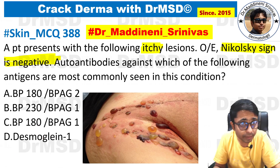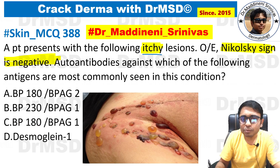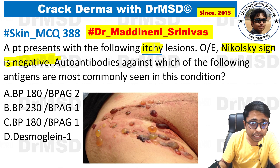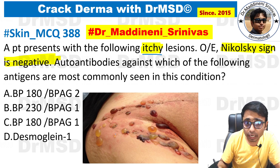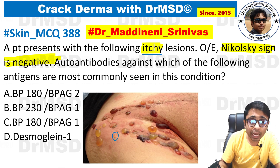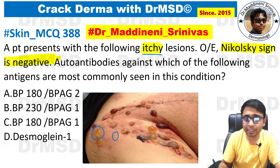There are only two clues which are given. The lesions are itchy and if you observe the image, you have some more clues. There are some fluid-filled lesions ranging from small lesions less than 0.5 cm — that is vesicles — to large fluid-filled lesions which are more than 0.5 cm, and they are called bullae. So vesicles and bullae are present.